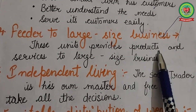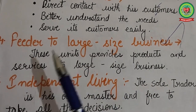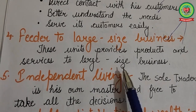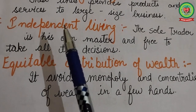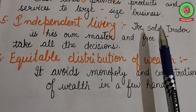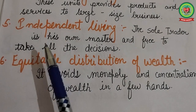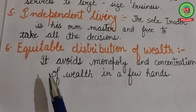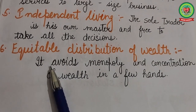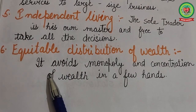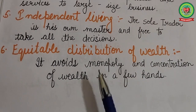The fourth objective is to feed large-size businesses — sole proprietorship firms are usually small in size and provide products and services to large-scale business organizations. The fifth is independent living — sole trade business provides opportunity for an independent living, as the sole trader is his own master and free to take all decisions. The sixth is equitable distribution of wealth — sole proprietorship helps in distributing income and wealth among a large number of people, helping to avoid monopoly and concentration of wealth in a few hands.